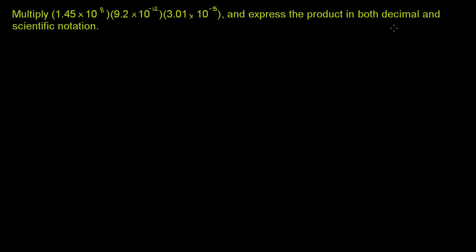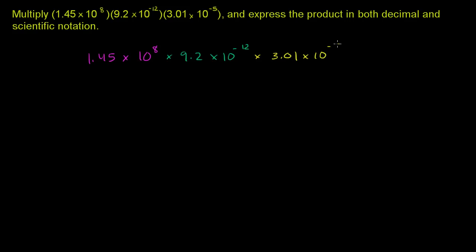We're asked to multiply 1.45 times 10 to the 8th, times 9.2 times 10 to the negative 12th, times 3.01 times 10 to the negative 5th, and express the product in both decimal and scientific notation.